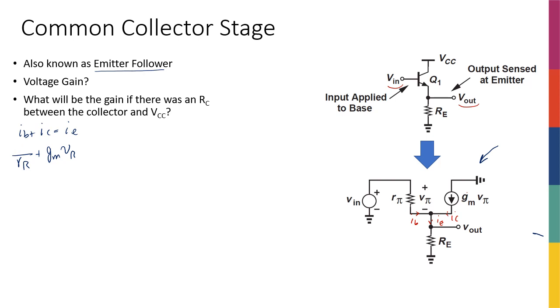Make sure we write this a little bit better. gm Vπ is equal to Re, i.e., which I'm going to call it Vout, divided by Re. Now taking out Vπ, I'm going to have 1 over Rπ plus gm times, and this is equal to Vout over Re. Let's do that in the next step.